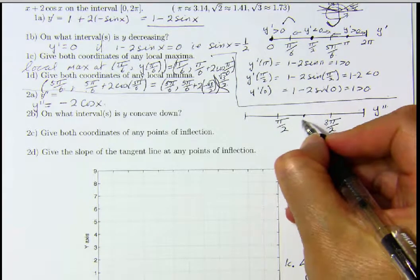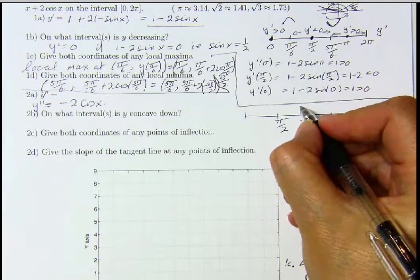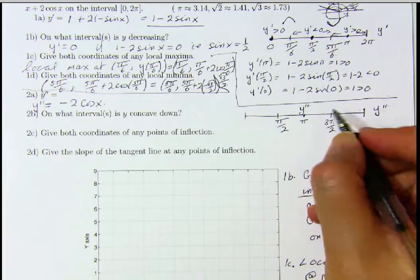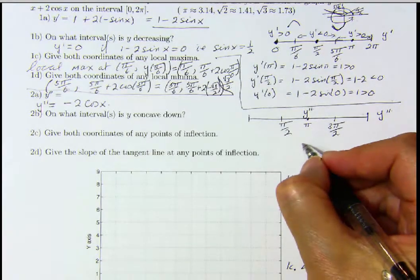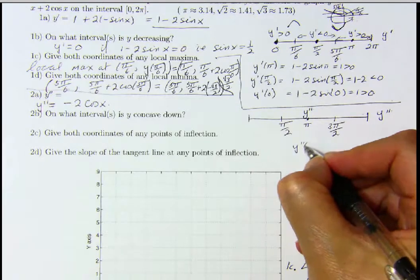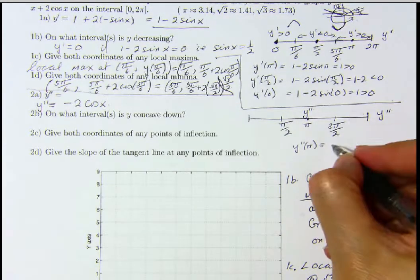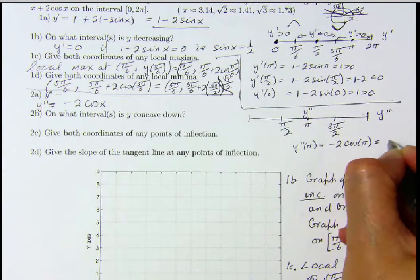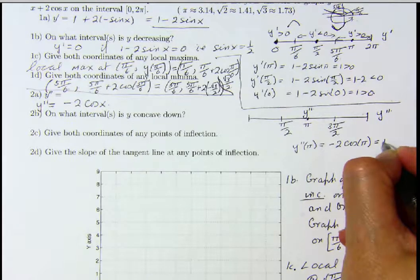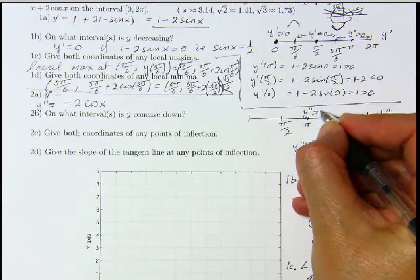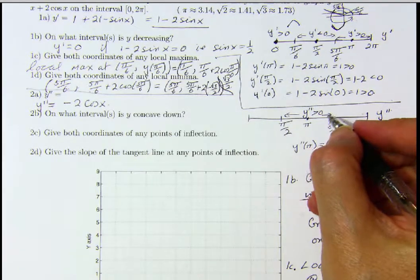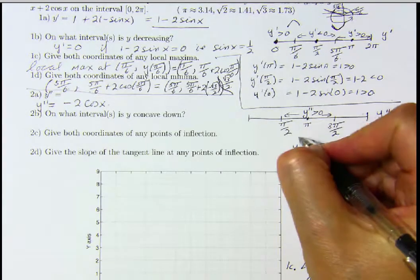Between π/2 and 3π/2, we check the sign of y double prime at π. Y double prime evaluated at π is equal to minus 2 times cosine of π, which is minus 2 times minus 1, which is plus 2, which is greater than 0. So this means that our graph is concave up on this interval.